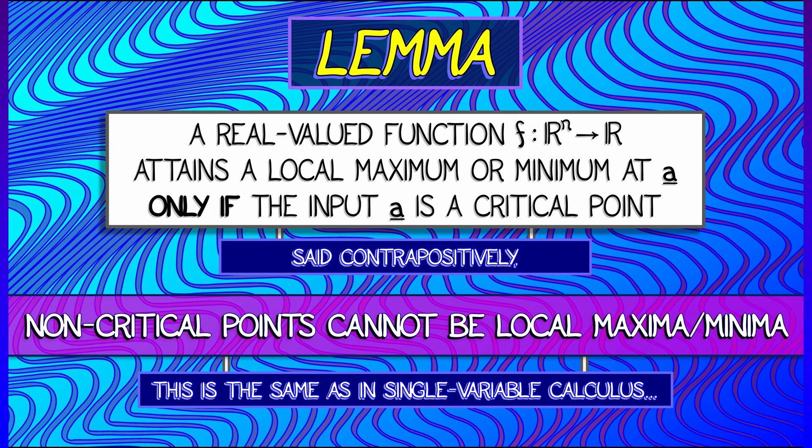They cannot be extrema. This is the same as it was back in single variable calculus. If any of the partial derivatives is non-zero, then you're increasing or decreasing in some direction.